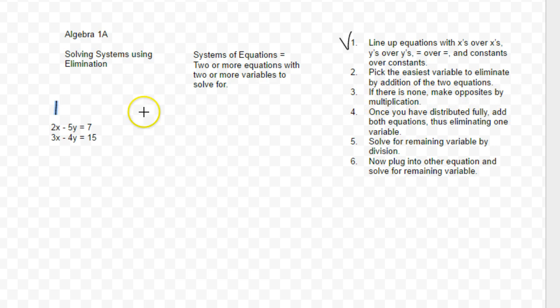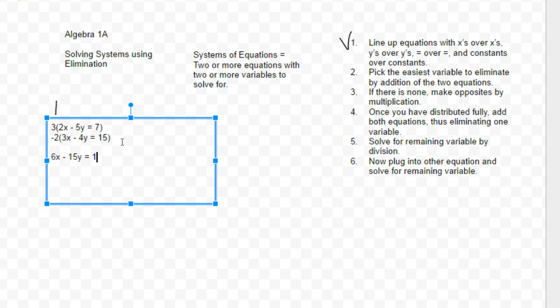Now if there is none, make opposites by multiplication. So what I'm going to do is I'm going to take this problem and I'm going to multiply the bottom by negative 2 and I'm going to distribute it throughout the entire equation. Now this one up here I'm going to distribute a 3. As I work on each one, I'm going to rewrite it beneath it.